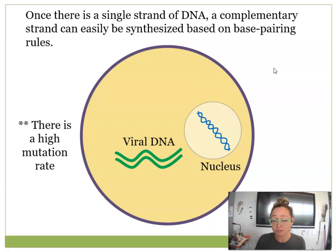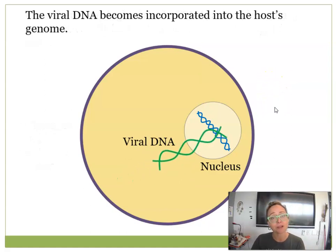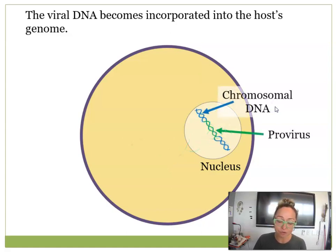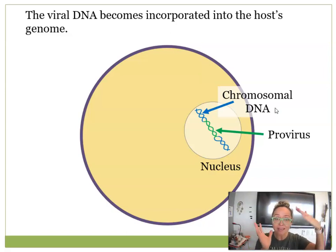The high mutation rate makes it very difficult to develop vaccines for viruses that mutate quickly. Now you have this double helix of viral DNA, and it will actually become incorporated into the host's chromosomes — into the host's genome. This viral DNA integrated into the host genome is called a provirus.